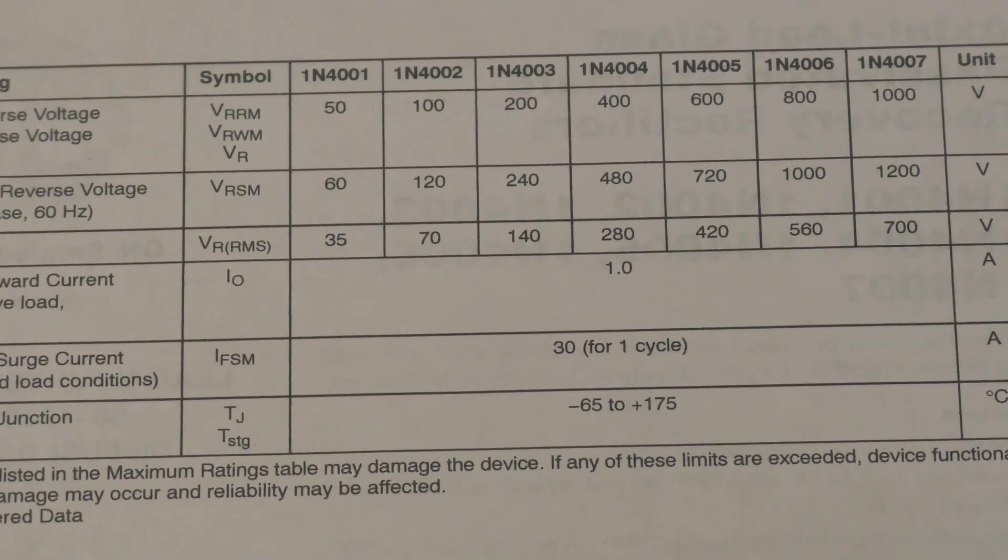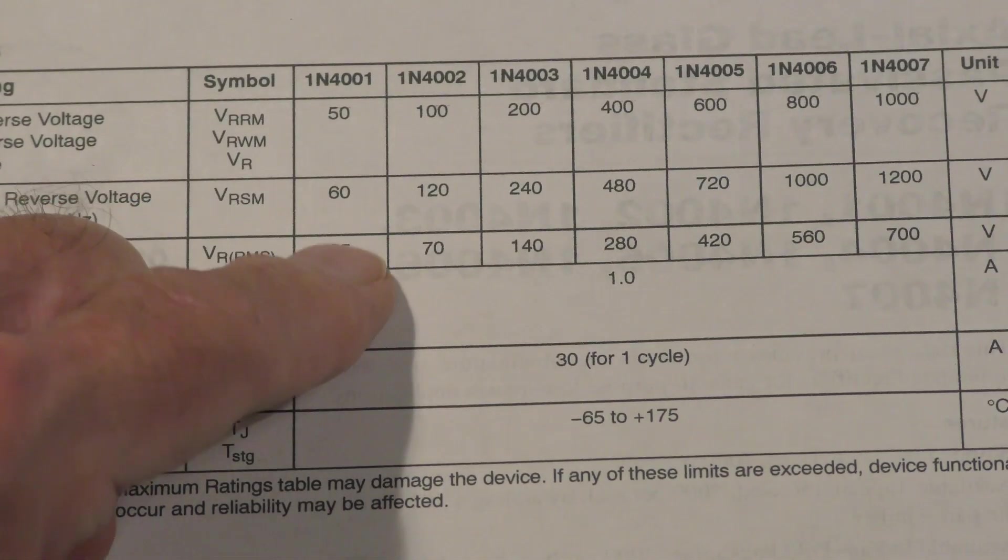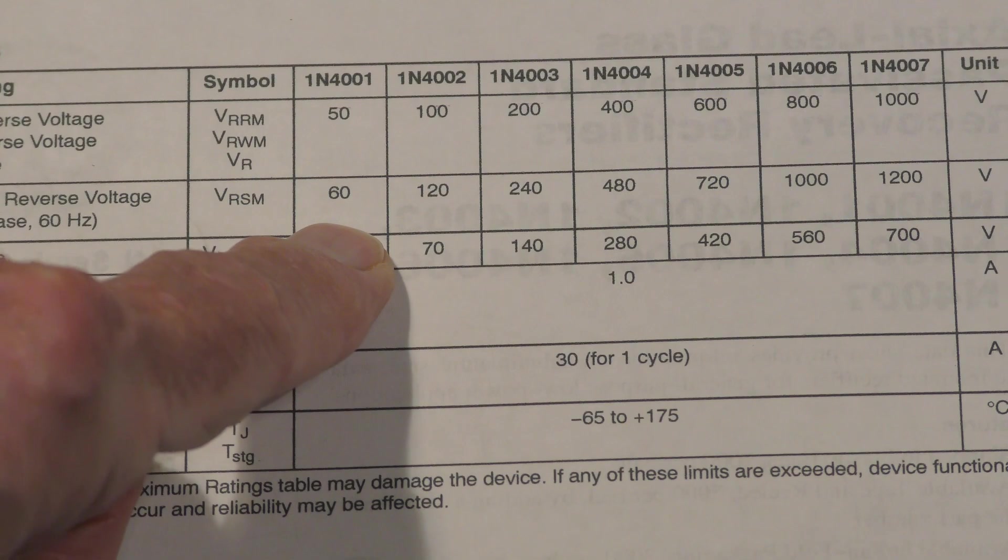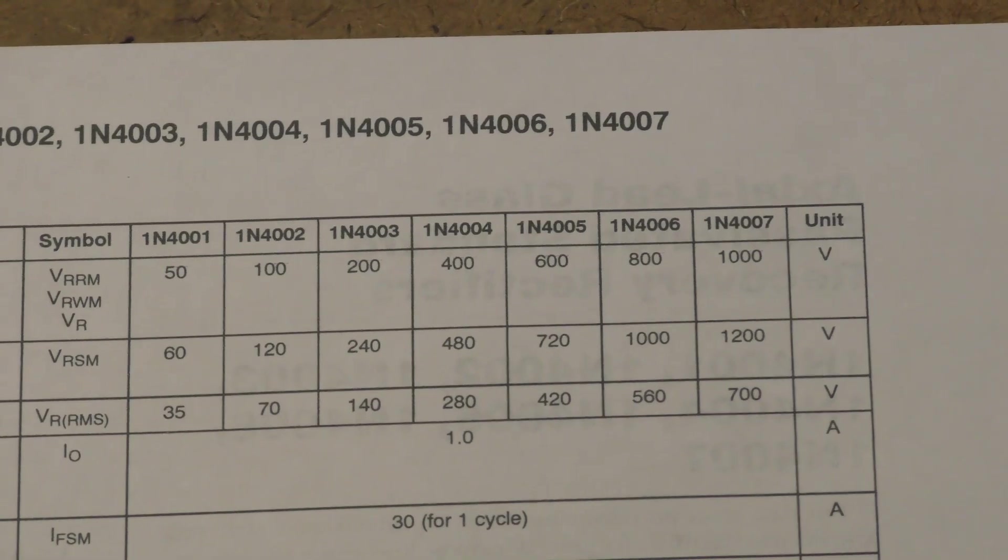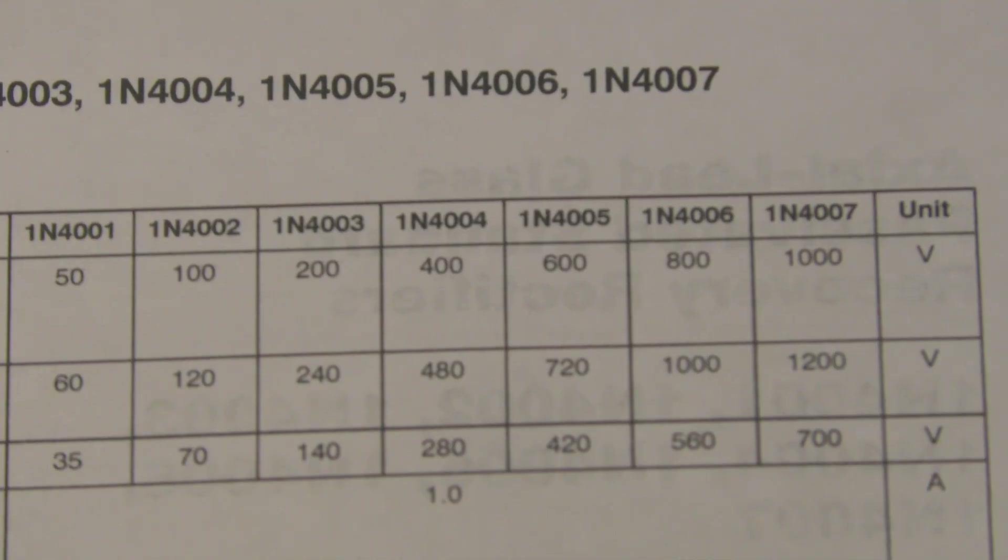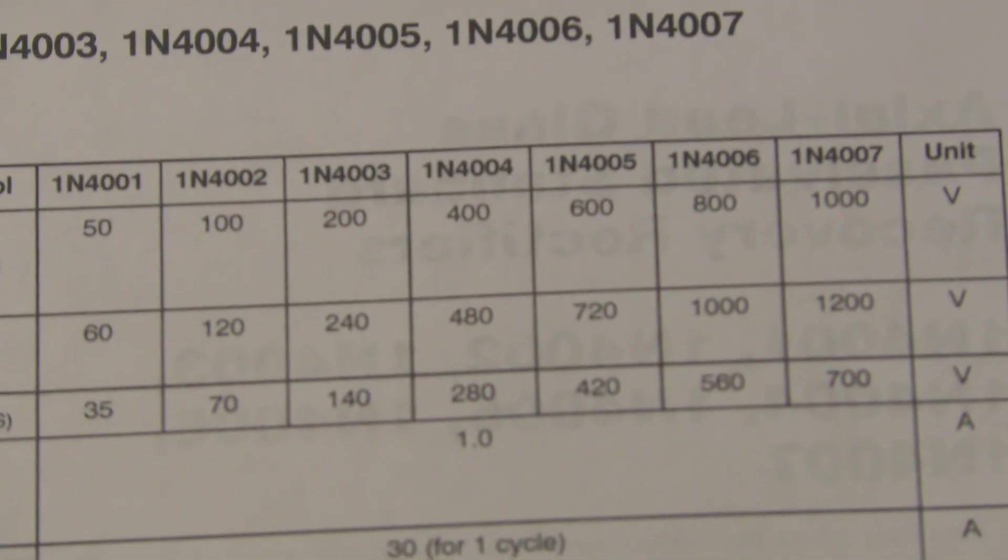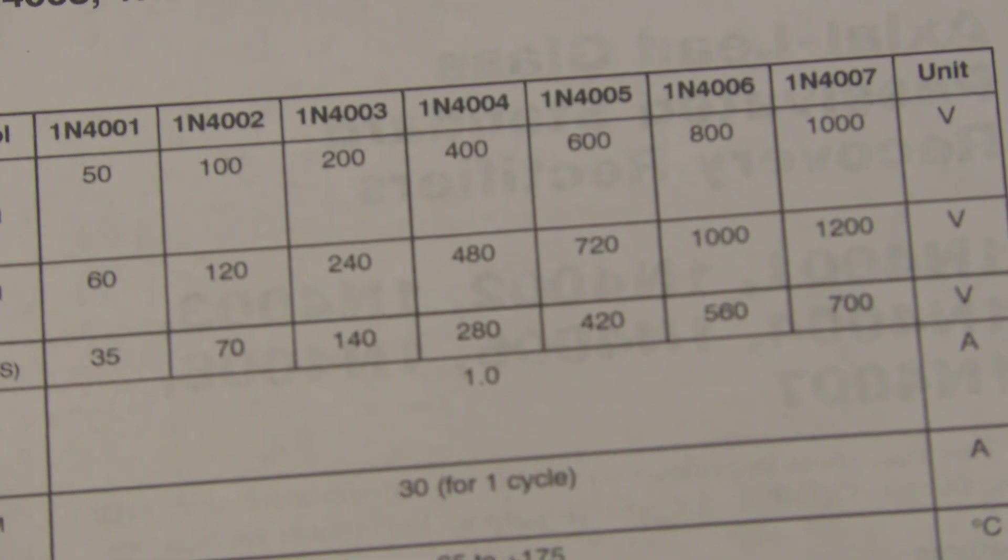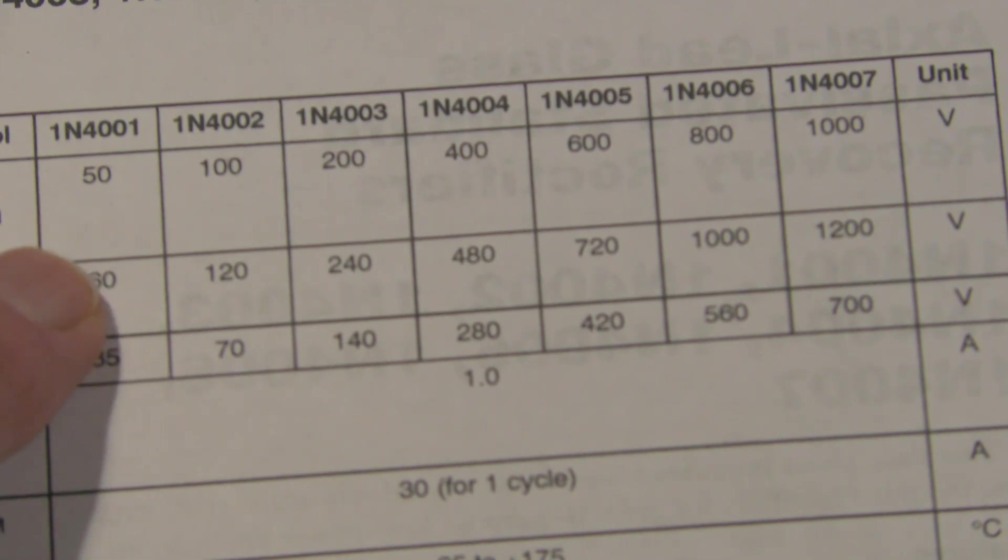The 4001 should be able to withstand 50 volts whether it's repetitive or non-repetitive. As you go up, you see that the 4007 for example will withstand a thousand volts. So it's not surprising that the diode we're testing at a thousand volts is breaking down.